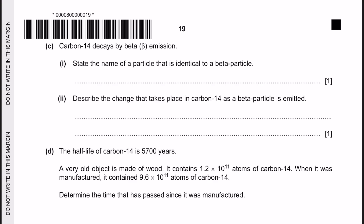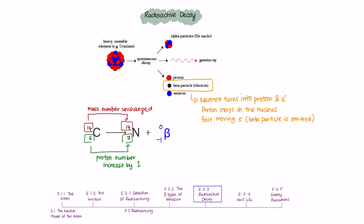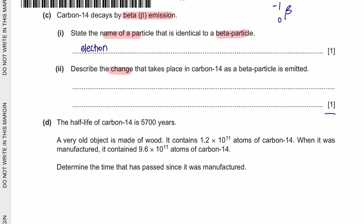Next question C: Carbon-14 decays by beta emission. Part 1: State the name of a particle that is identical to a beta particle. A beta particle has a charge of negative 1, which is similar to an electron. Part 2: Describe the change that takes place in carbon-14 as a beta particle is emitted. During the emission of a beta particle, a neutron will turn into a proton and electron; the proton will remain in the nucleus and you will have a fast-moving electron — the beta particle — emitted. During this decay, the mass number remains unchanged but the proton number increases by 1. Since you are only given 1 mark, you can mention that a neutron will change into a proton and electron.